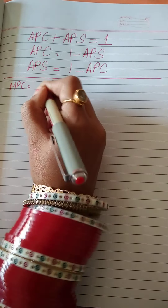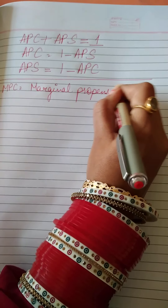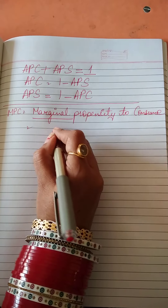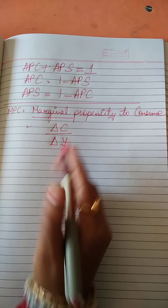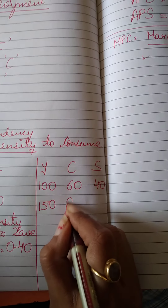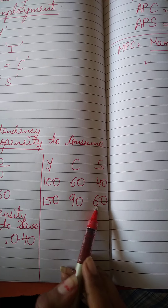Next is MPC, that is Marginal Propensity to Consume. It is the change in consumption upon change in income — how much our consumption changes due to a change in income. Suppose income goes from 100 to 150, and consumption goes from 60 to 90. Then delta C is 30, delta Y is 50, so MPC equals 30 upon 50, which is 0.60.